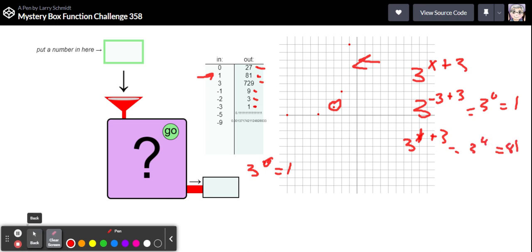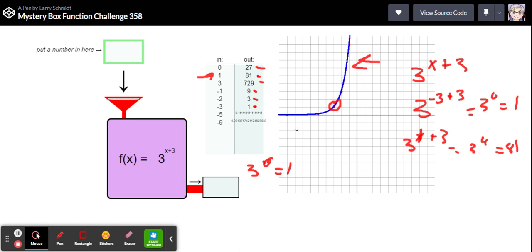So I think we've got this one. It's that plus three in our exponent to move it over to the left by three. Let's go ahead and reveal, yeah three to the x plus three, and let's graph and there it is that classic exponential shape just moved over a few units to the left.